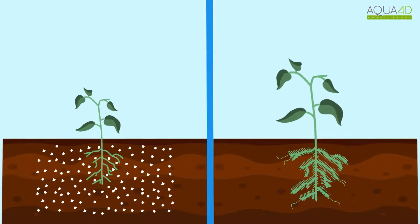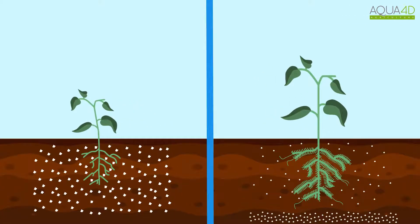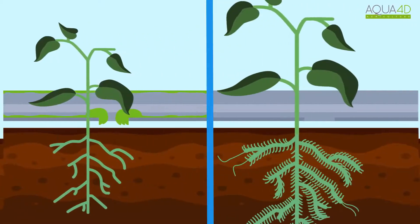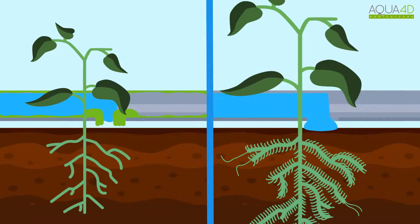Aqua 4D decreases the concentration of bad minerals in the soil. It's also effective against clogging due to mineral and organic deposits, and gradually eliminating biofilm in the pipes, reducing bacterial presence in water.